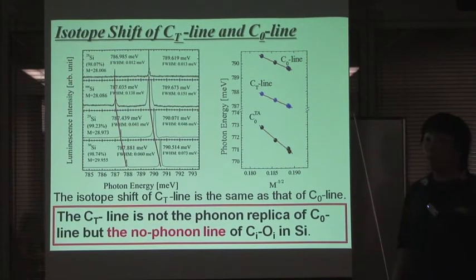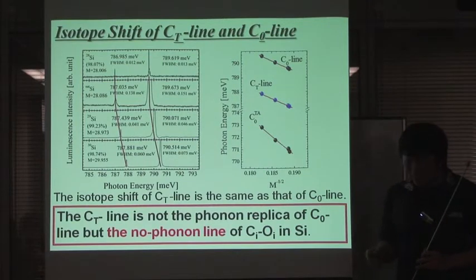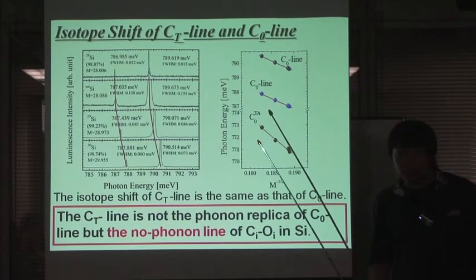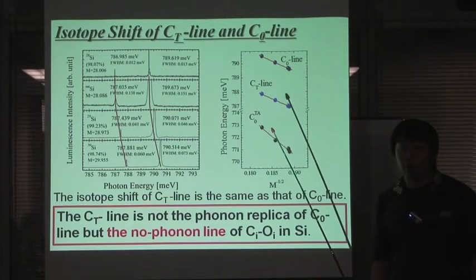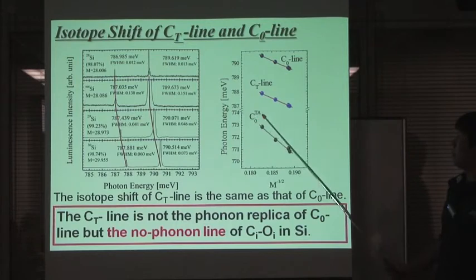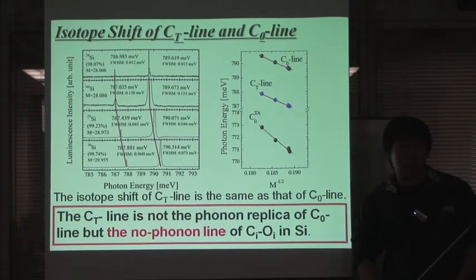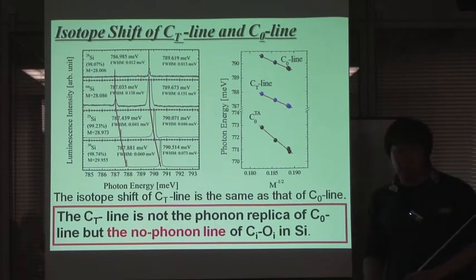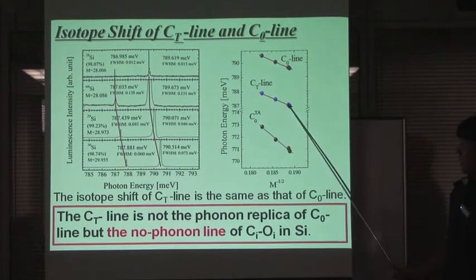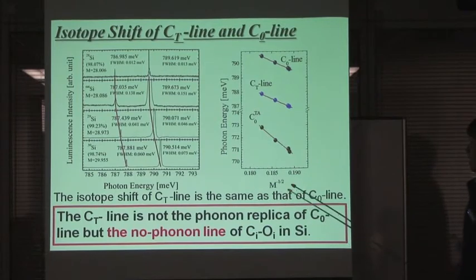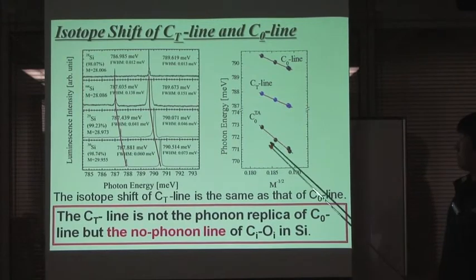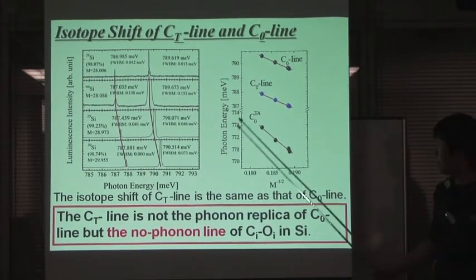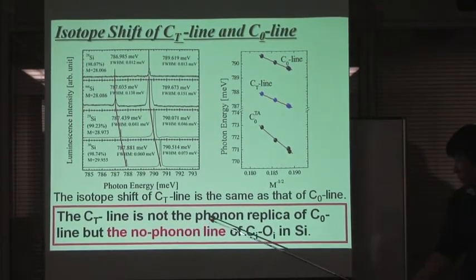The difference in isotopic composition influences not only the electron and hole energy, but also the phonon energy. So the isotope shift of the phonon replica, like the C0-TA line, involves the energy shift of the exciton contributing to the no-phonon line and the change of the phonon frequency. The isotope shift of the CT line is the same as that of the C0 line, while the isotope shift of the C0-TA line is much larger. Therefore, the CT line is not the phonon replica of the C0 line, but the no-phonon line of the carbon-oxygen defects in silicon.